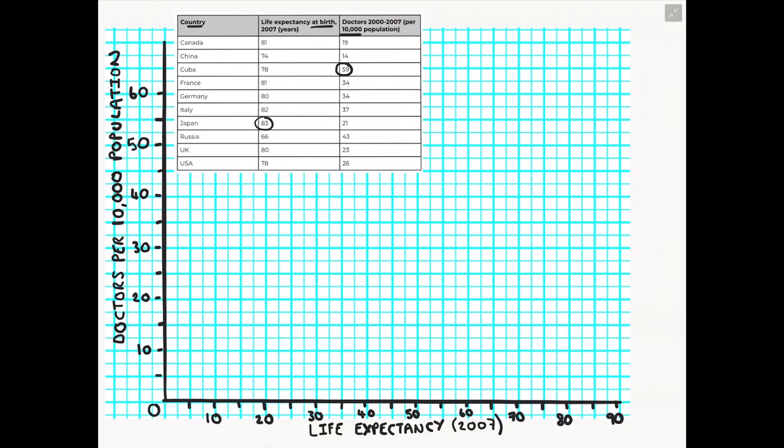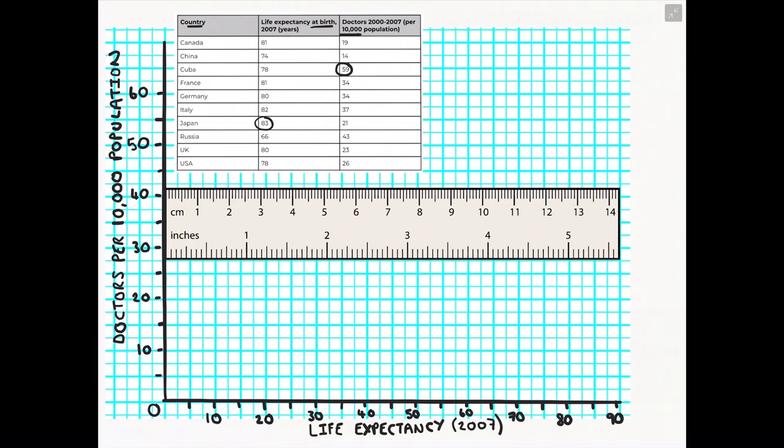Now I strongly recommend when we're drawing a scatter graph for you to keep a ruler handy throughout this whole entire process. This will allow your points to be plotted more accurately on your scatter graph and therefore will increase the accuracy of your relationship and correlation you might see at the end.